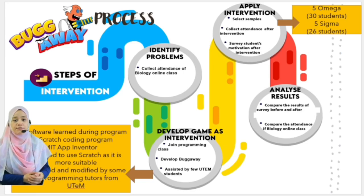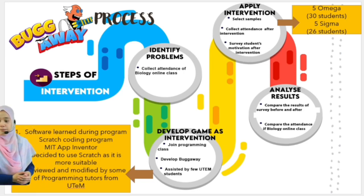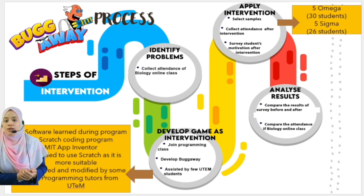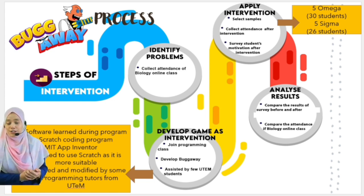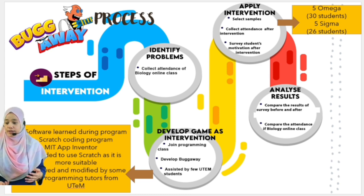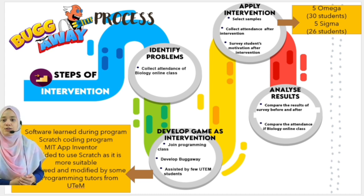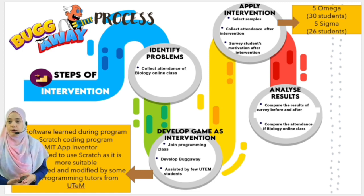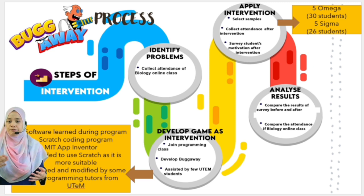The steps of intervention begin with identifying the problems: decreasing student attendance, submission rates, and motivation. I then attended online courses on coding and developed The Bugger Way with the assistance of UTEM students. We then selected samples and collected daily attendance data.